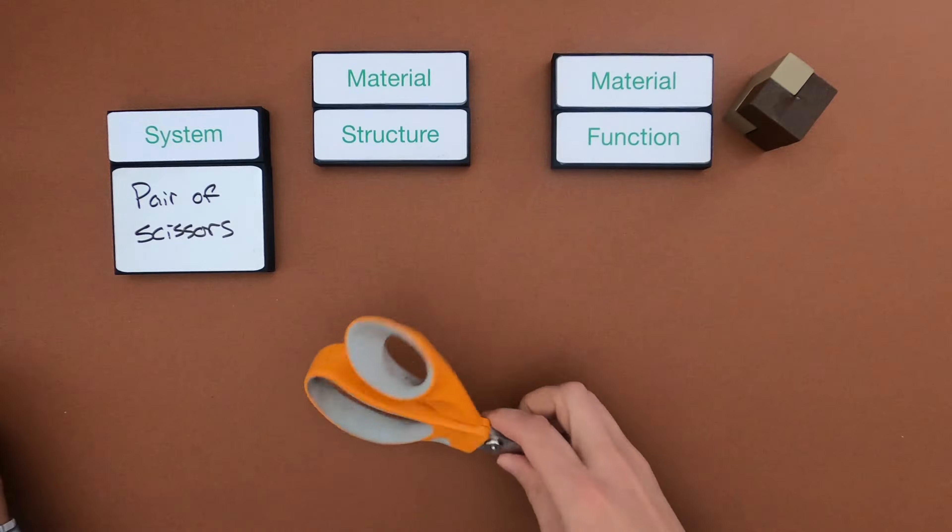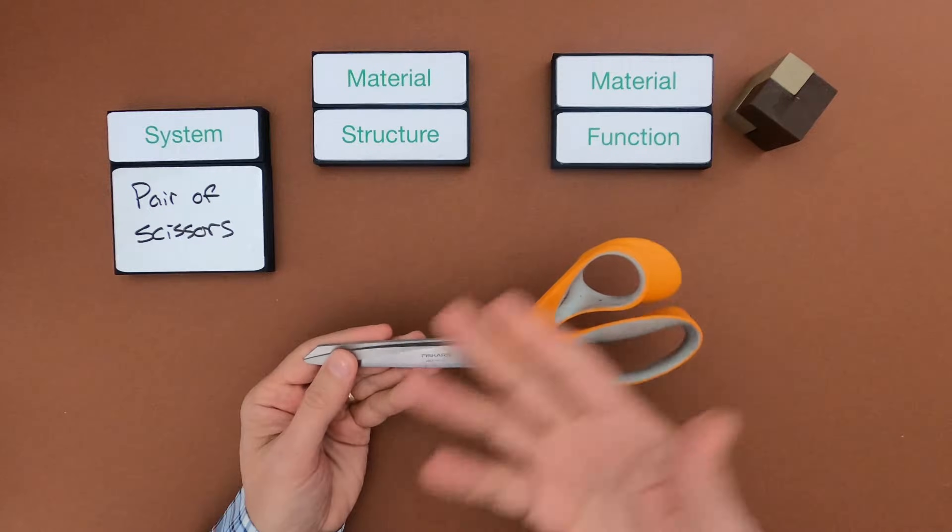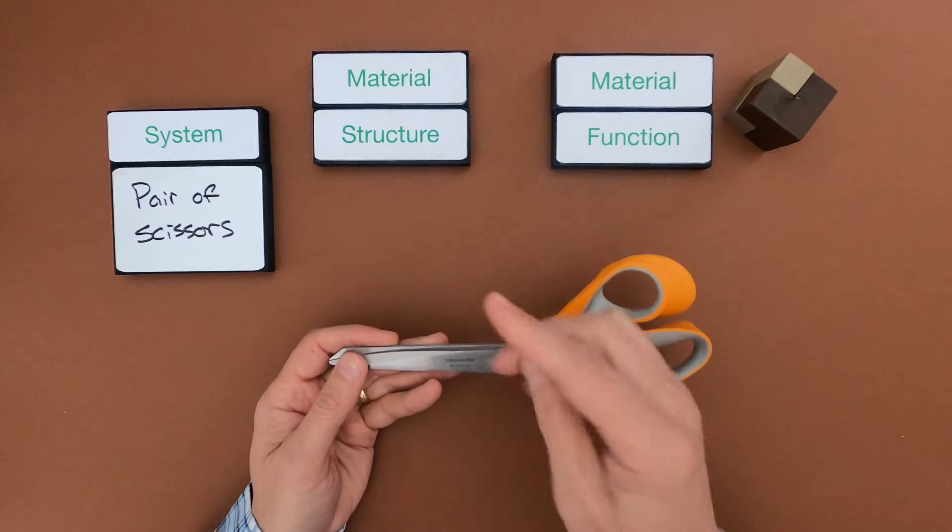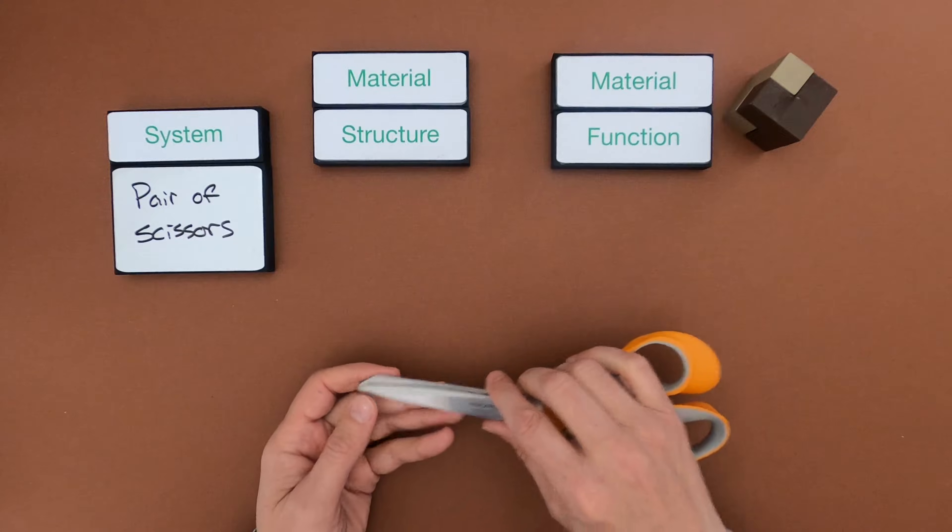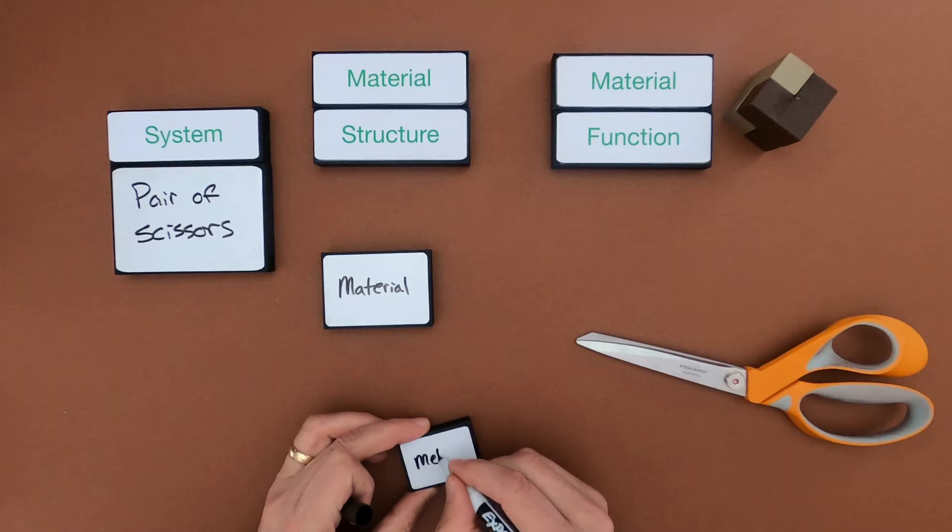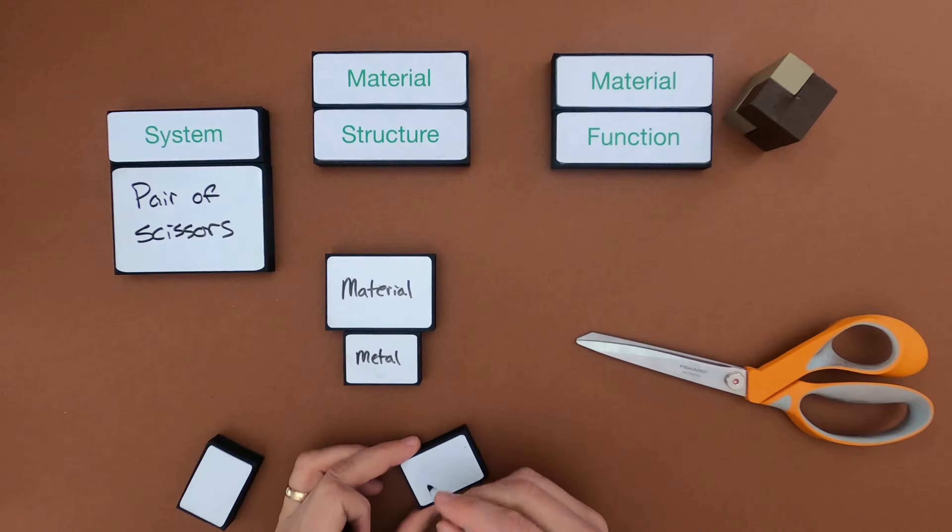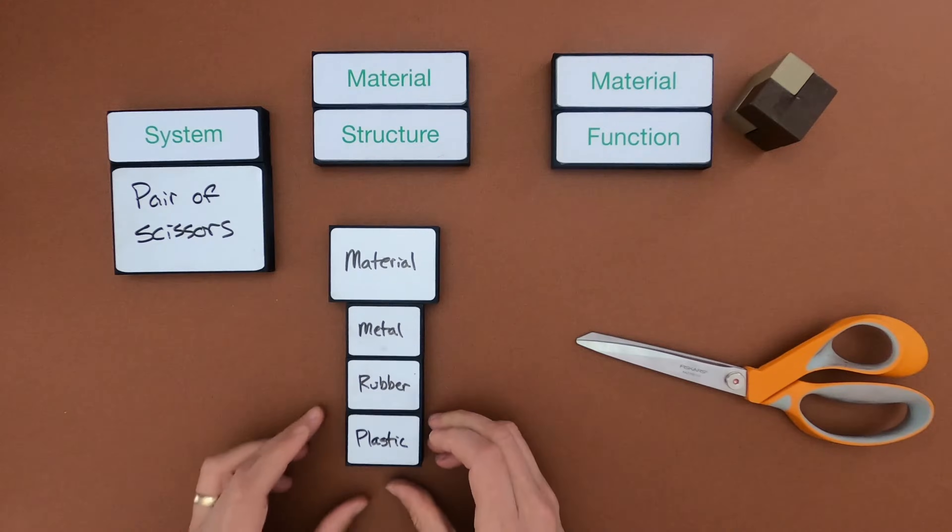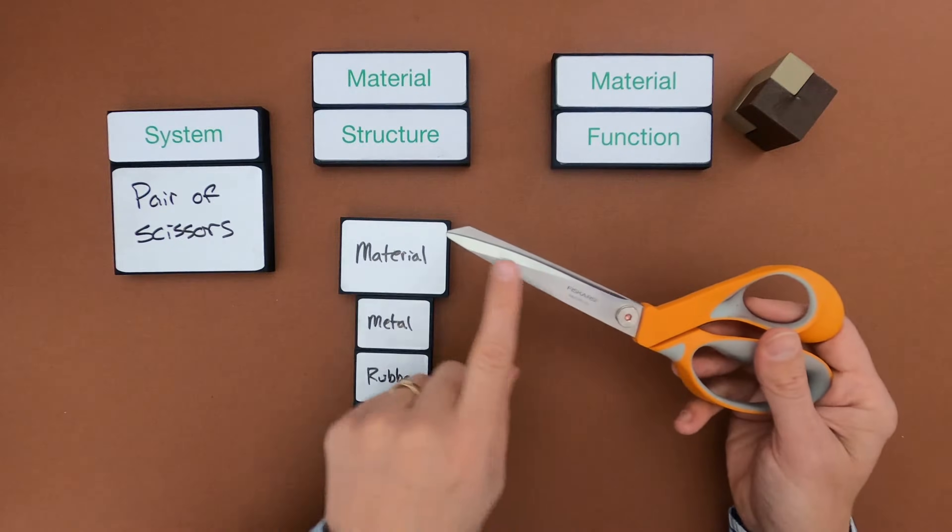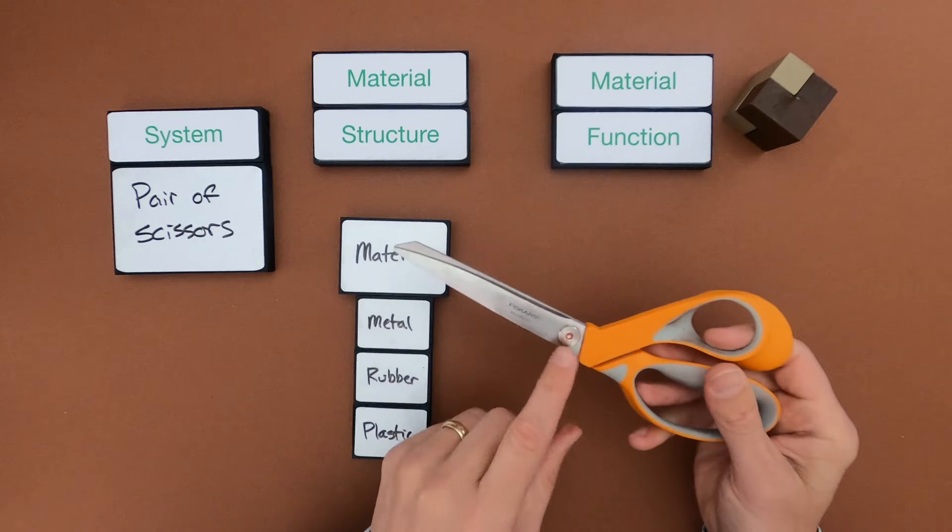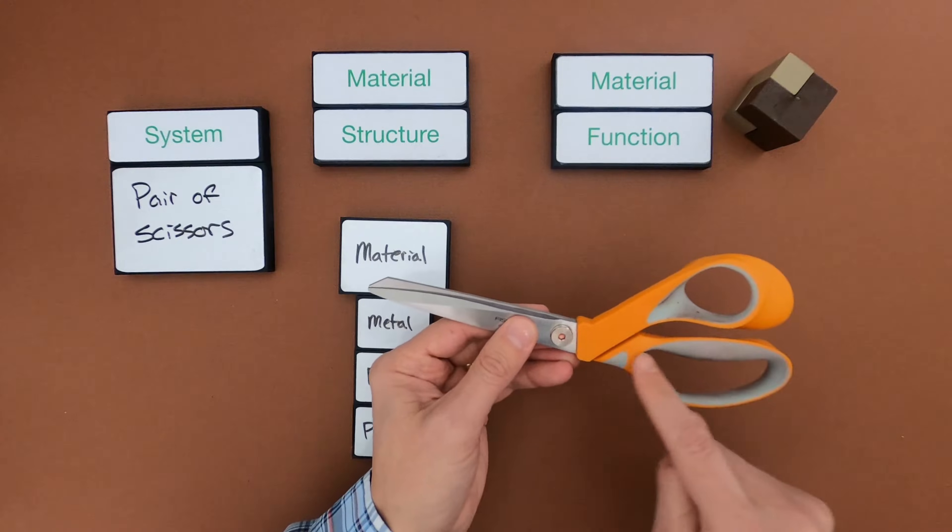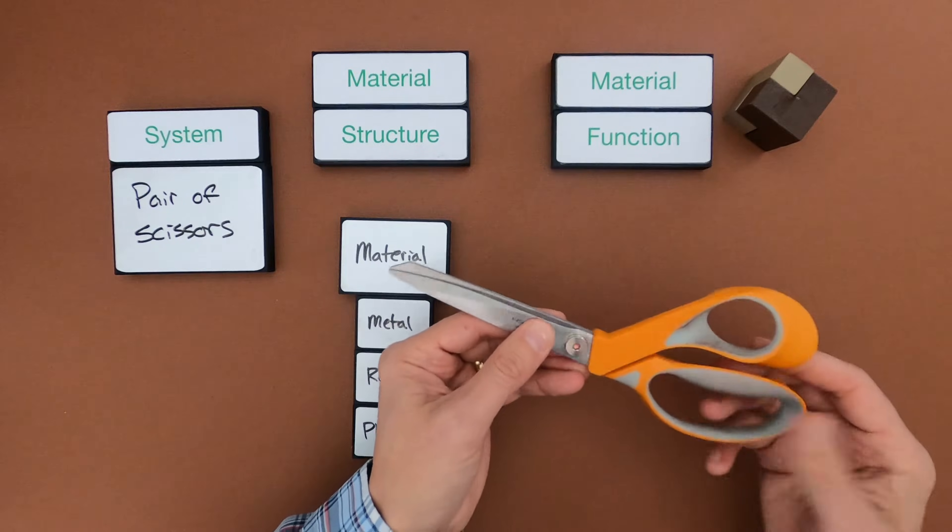The next thing you want to do is start thinking about what is this made up of? What is the material that makes up the scissors? So I see really three types of material. Let me list these out under material structure. So the three materials that I see in the scissors is going to be the metal. The metal makes this cutting part. It also makes this little screw that holds the two parts together. And probably the metal goes up into where the handle is.